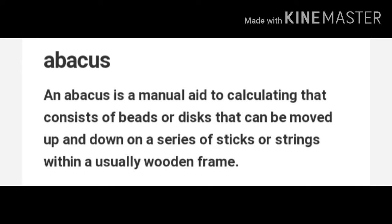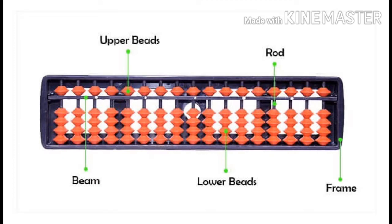So let's start. First of all we will discuss some parts of the Abacus. As you have previously studied this, we will discuss it again. The outer part is called the frame. The lower ones are called the lower beads and the beads which are up are called the upper beads. The mid part is called the beam and the rods going vertically up to down are called the rods of the Abacus.